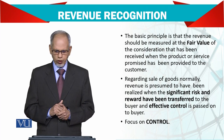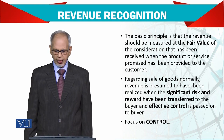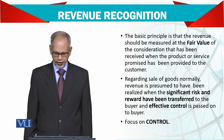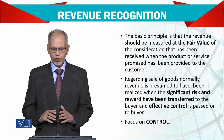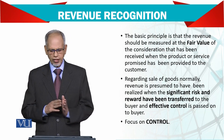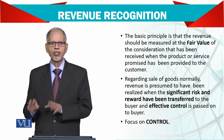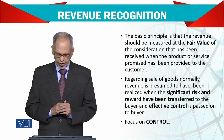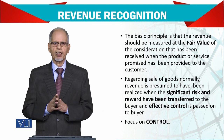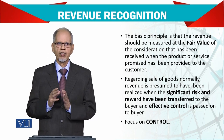Regarding sale of goods, revenue is presumed to have been realized when the significant risk and reward have been transferred to the buyer and effective control has passed to the buyer. When selling goods, both the risk and reward must transfer. The seller dispatches the goods and the buyer takes responsibility for all risk and reward.